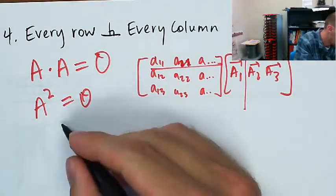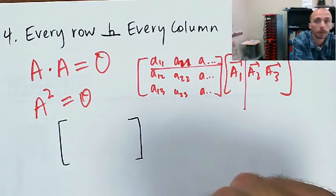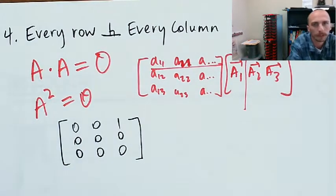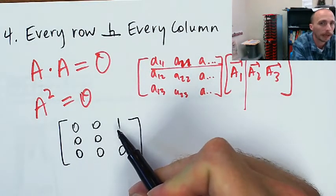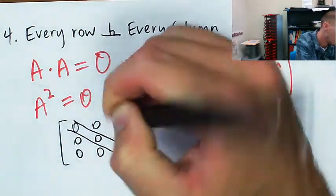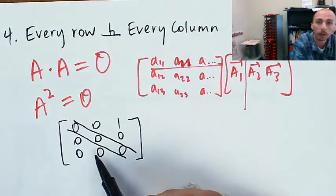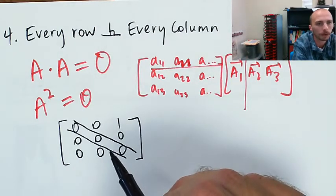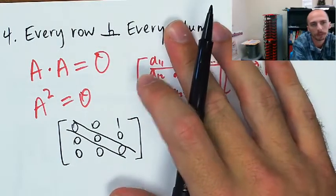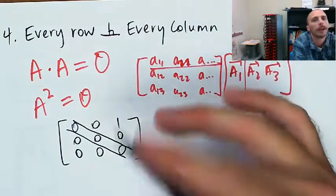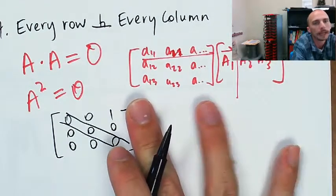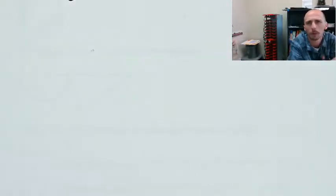Here's one solution we came up with in class. It's almost a zero matrix but with a 1 off the main diagonal. We found that we must have all zeros along the main diagonal — if there were a 1 on the diagonal, dotting that row with that column would give 1, not 0. Also, having more than one non-zero entry risks producing non-zero dot products. This matrix, when squared, gives the zero matrix — every row is orthogonal to every column. You can check it yourself.